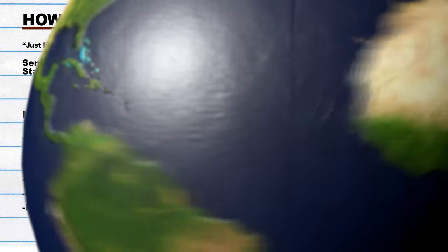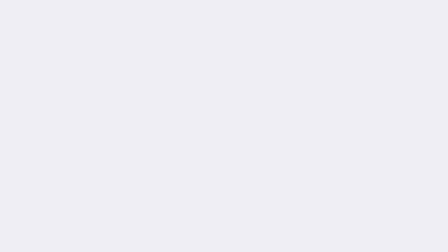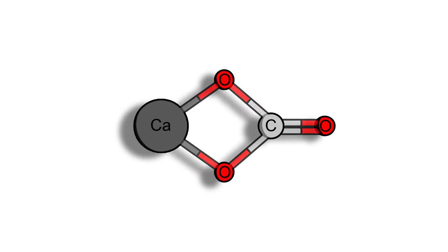First is limestone. Limestone is a very common rock found in shallow, calm, warm marine waters. It has a simple composition consisting of one calcium atom, and one carbon atom, and three oxygen atoms.